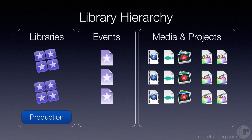In terms of how you might think about organizing, we call them self-contained production units because you might set up a library for a specific type of project — maybe it's an event, maybe it's a television show, maybe it's a film. So we relate the libraries to the types of productions you're going to be editing. Under events, we call them workspaces, and it's the logic of how you set up your import in terms of media, because you can have multiple events within a single library. The last section would be your timelines — your work, your story, the story you're trying to tell.